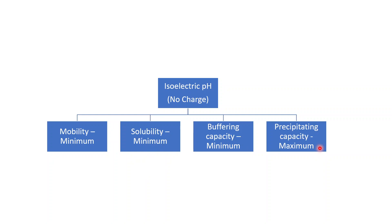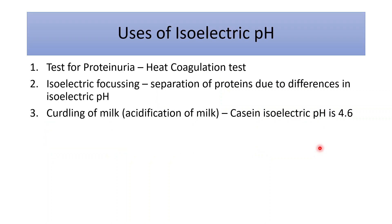On the other hand, the precipitating capacity becomes maximum. If the solubility is zero, obviously the precipitating capacity becomes maximum. So at isoelectric pH: mobility is minimum, solubility is minimum, buffering capacity is minimum, and precipitating capacity is maximum.